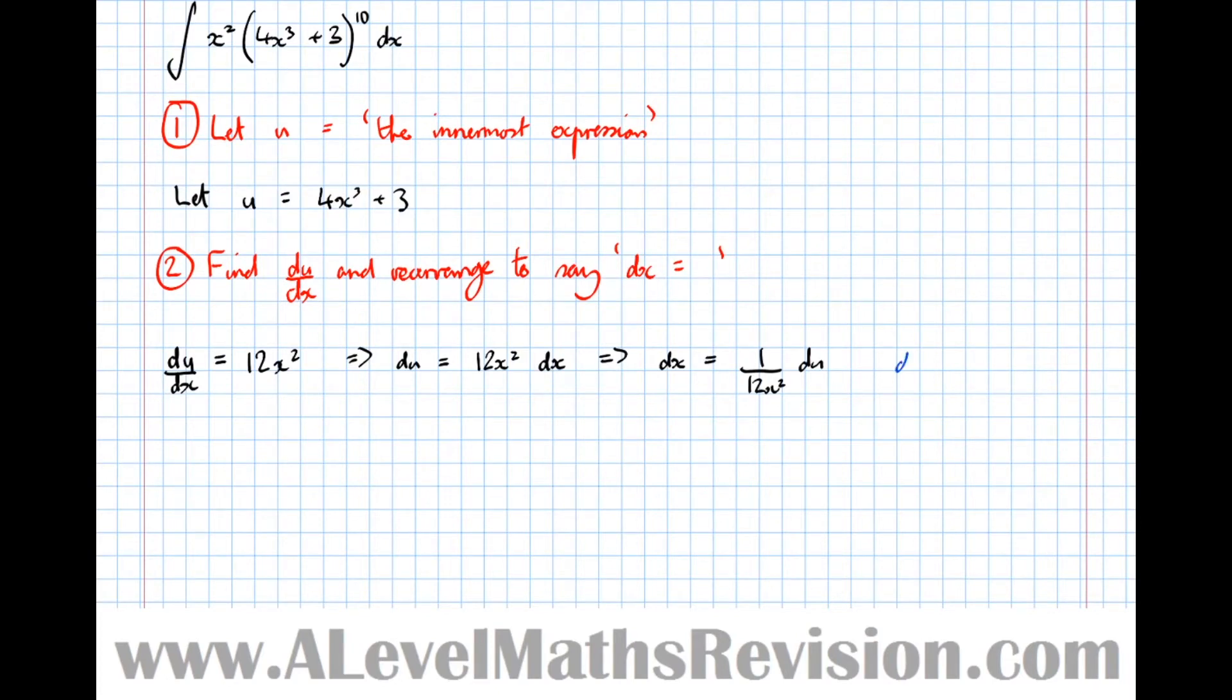What we could have also written is dx equals du over 12x squared. However, I prefer not to write that. Whilst it's mathematically correct, I think it's more confusing, because what we're used to seeing is an integral sign being like the start of a mathematical sentence, and a dx or a du being the end of that sentence, almost like a sentence opener and then a full stop. So I like to keep that convention going. I like the du or the dx to be the last thing I write in a mathematical sentence.